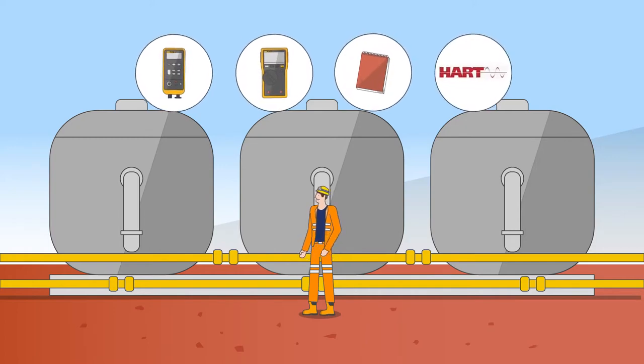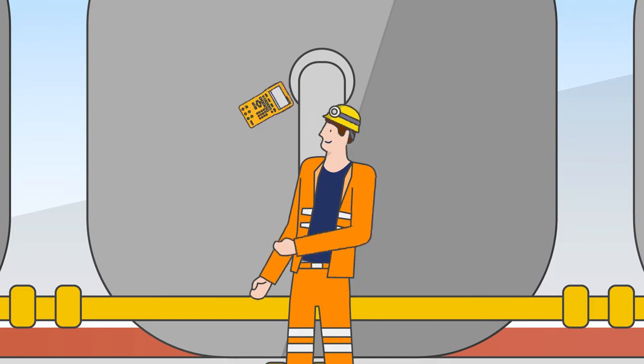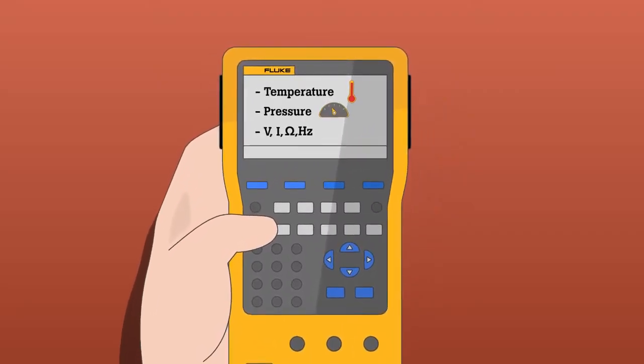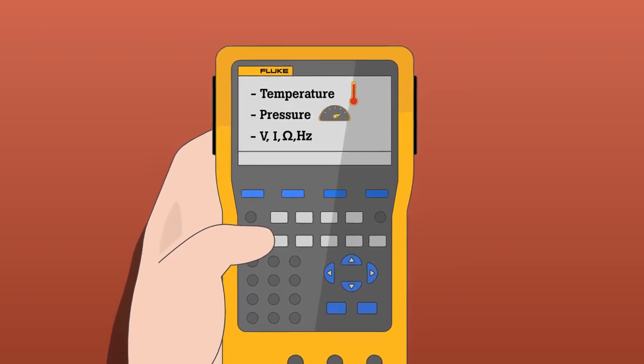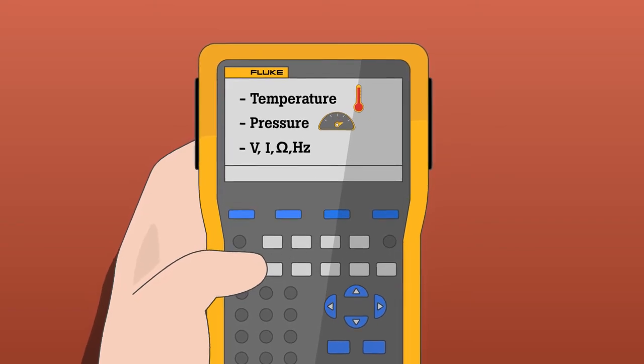Multiple transmitters in a processing line require different types of calibrators and manual documentation. The Fluke Multifunction Documenting Process Calibrator is an all-in-one product that troubleshoots, calibrates and tracks your maintenance routine, helping you work smarter and faster.